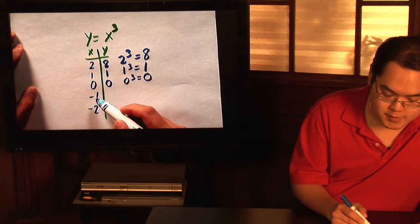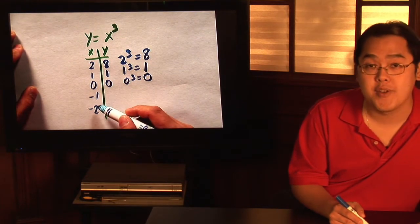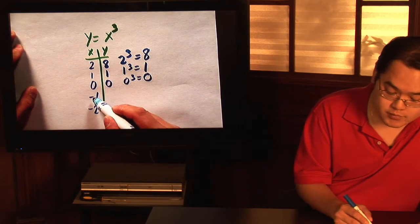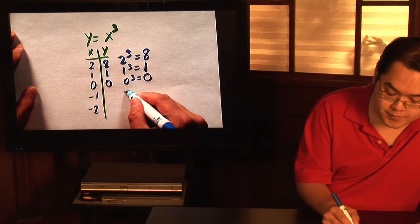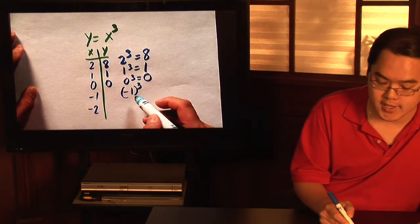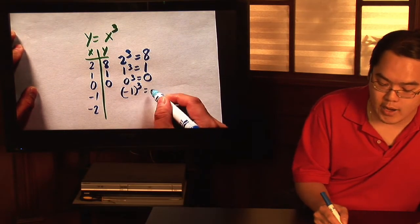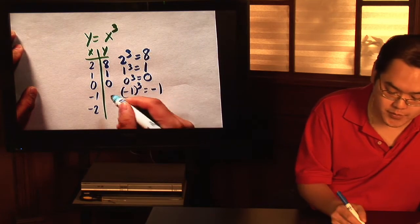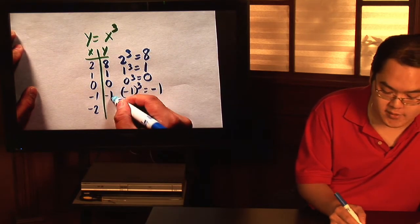So now, supposing since you already picked 1 and 2, how about negative 1 and negative 2? Now, negative 1 cubed—it's always good to write the negative number in parentheses whenever you can. Negative 1 to the third power is going to give you negative 1. So when x is negative 1, y is negative 1.